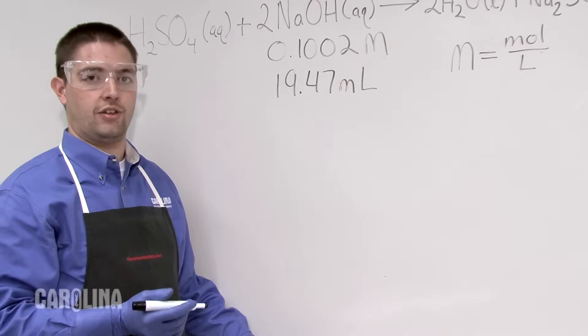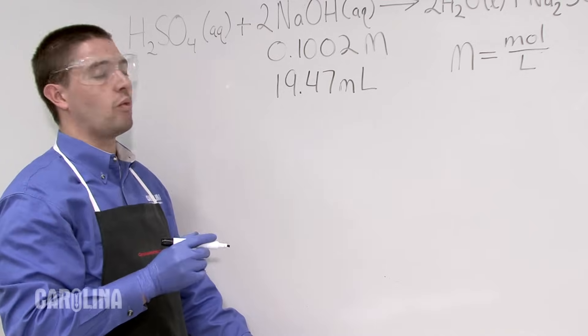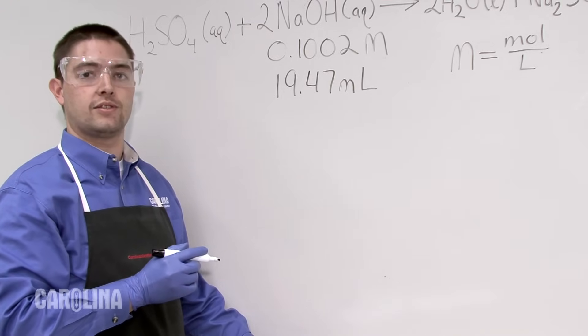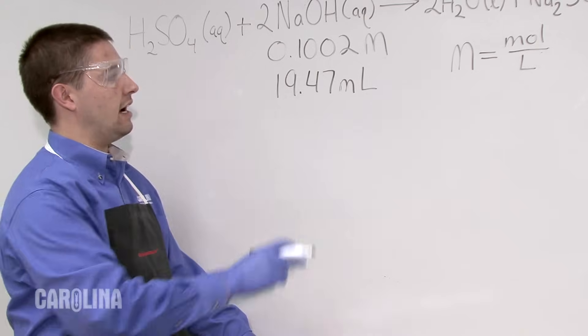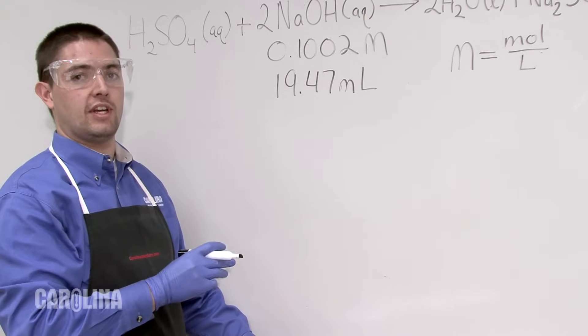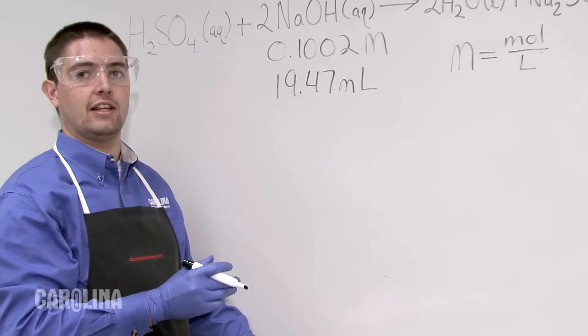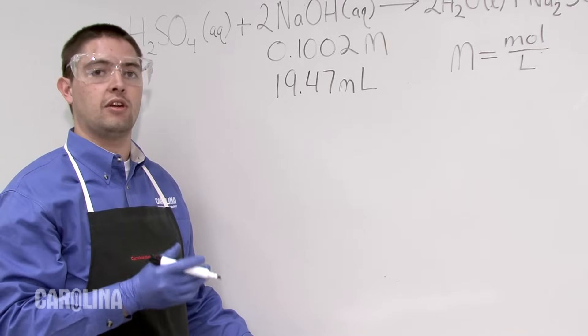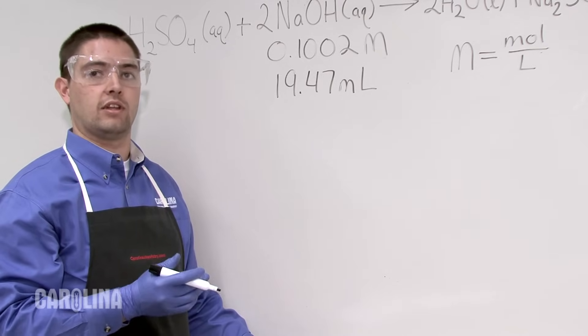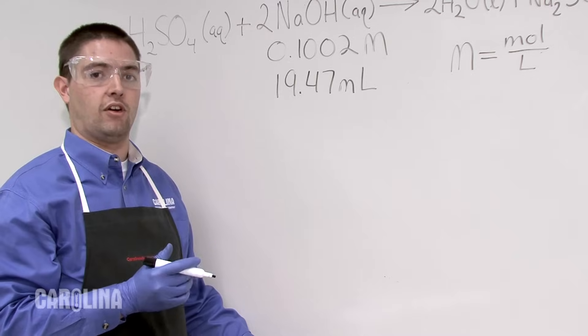In our reaction, we use the standardized 0.1002 molar solution of sodium hydroxide. Knowing now that it takes 19.47 milliliters, we can calculate the number of moles of sodium hydroxide it took to neutralize our 10 milliliters of sulfuric acid.